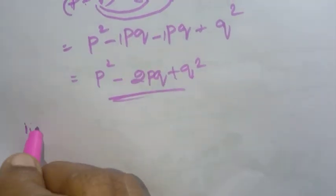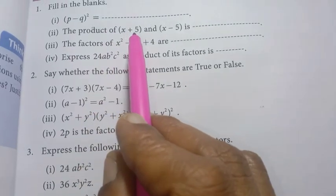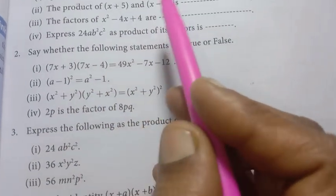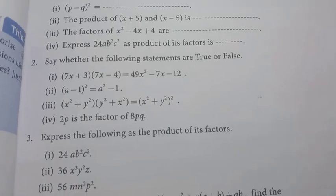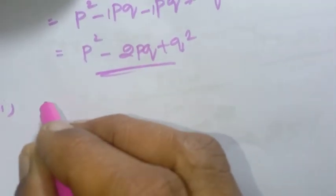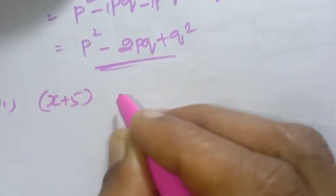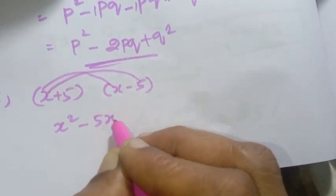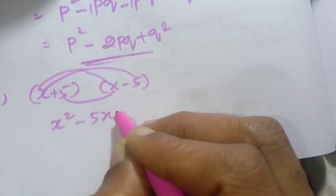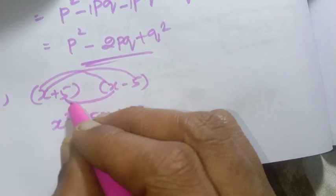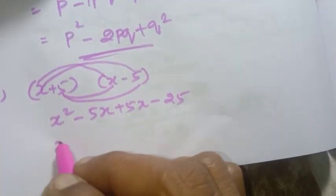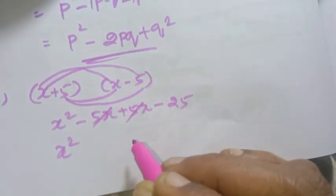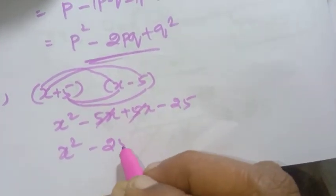Second fill in the blanks: the product of x plus 5 and x minus 5. We multiply: x into x is x squared, x into minus 5 is minus 5x, plus 5 into x is plus 5x, plus 5 into minus 5 is minus 25. The 5x terms cancel. So the answer is x squared minus 25.